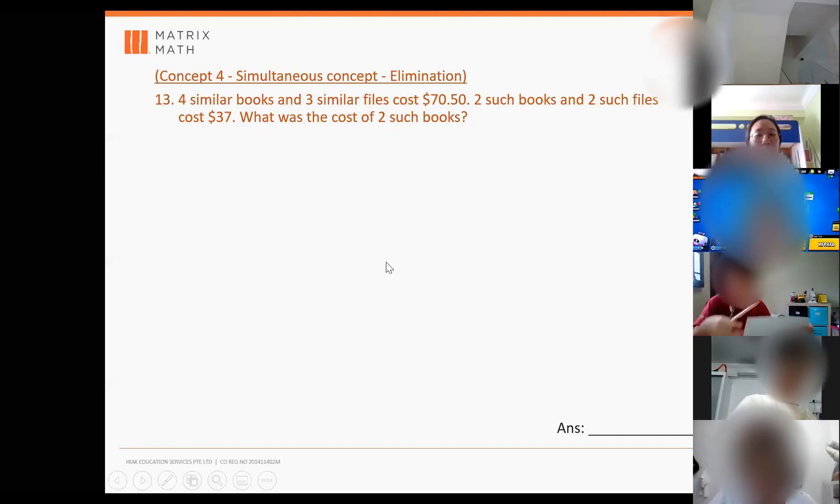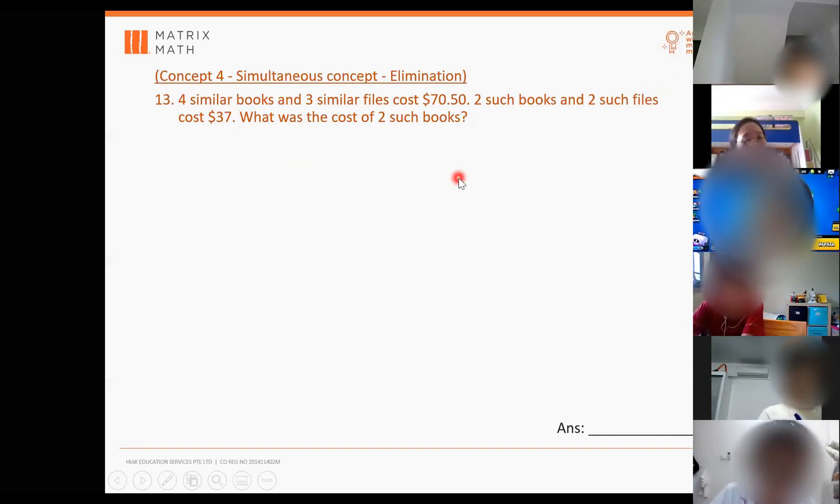Okay, this one. So four similar books, this is like concept 2, right? Something like that, yes. So four books and three files cost $70.50. Can you put the microphone in your market?